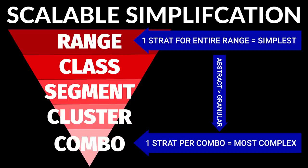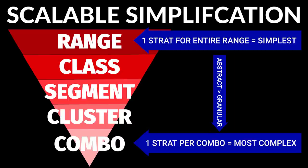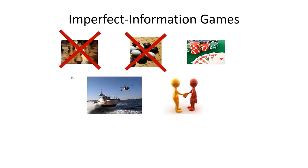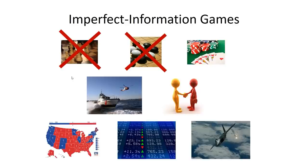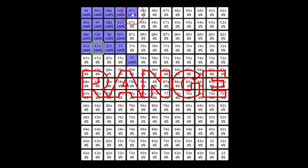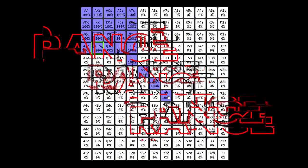So what do we mean by abstract and granular? In order to understand this, we first need to step back and define what a range is and why it is important. Since poker is a game of incomplete information, where each player's cards are dealt face down, in order for players to make rational decisions, they must assess the likelihood of their opponents holding certain cards. The collection of all possible hands a player is likely to have is called his range, and this range is shaped by a player's actions at previous decision points and affected by new community cards.